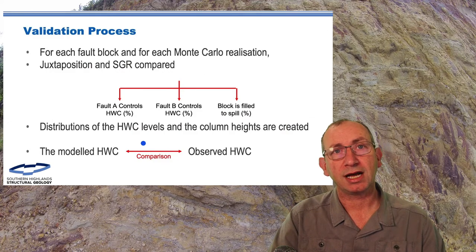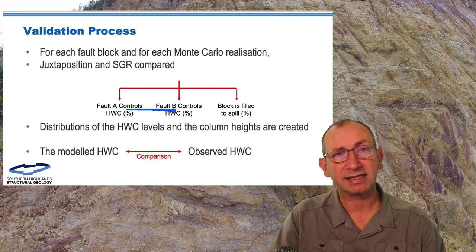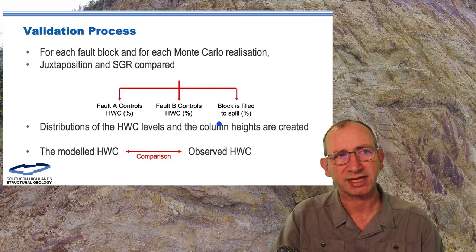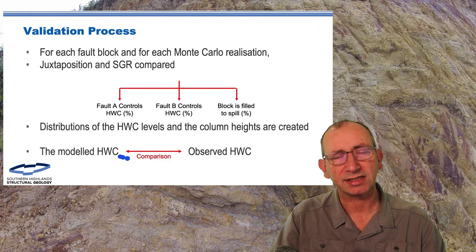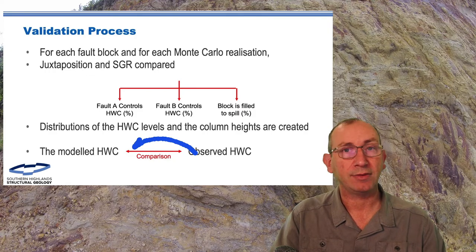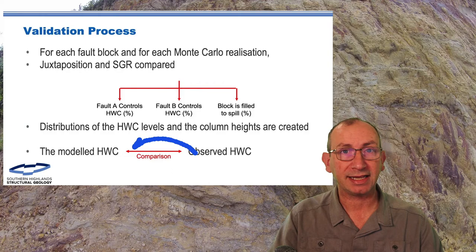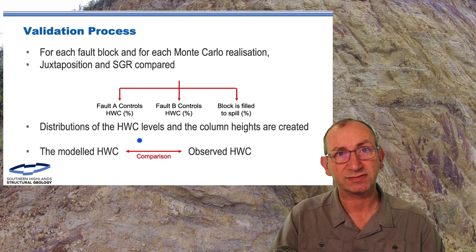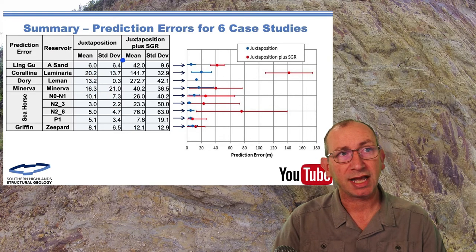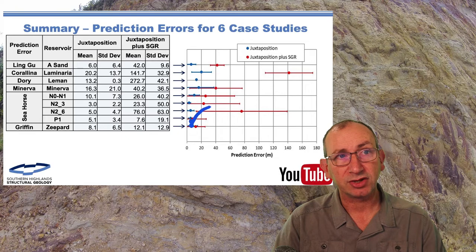For each fault block we look at each realization — is it fault A, fault B, or filled to spill — and for each realization we get a weakest leak point and a distribution of hydrocarbon-water contacts. For each realization we can also compare the modeled hydrocarbon-water contact with the observed contact in hindcasting. That comparison is really useful. In summary, the SGR error is always larger than the juxtaposition error.